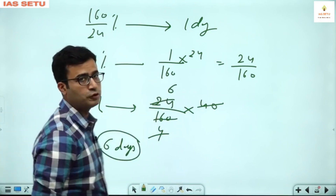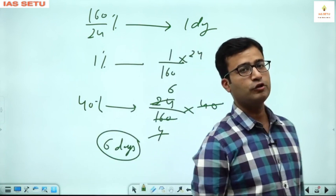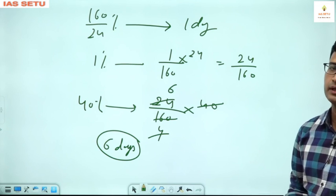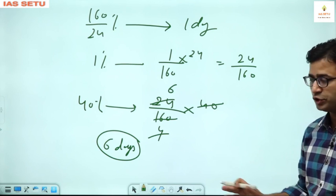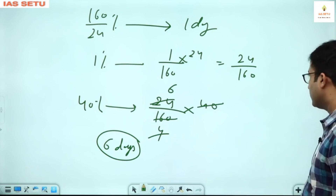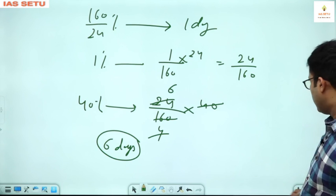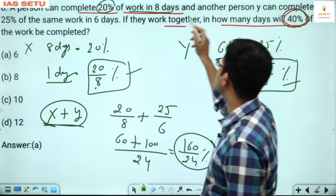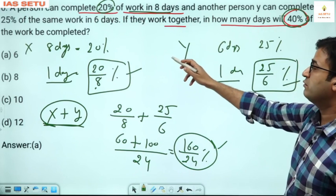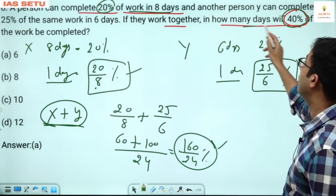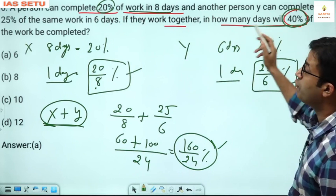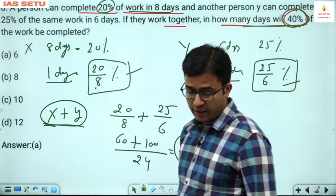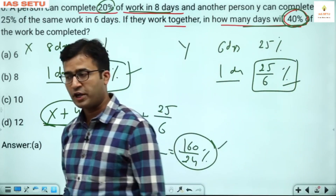Both methods give 4 steps and the same answer. You can use either method. In this question, 20 percent work in 8 days and 25 percent work in 6 days are given, and together 40 percent of work is completed in 6 days. This is time and work. Thank you.